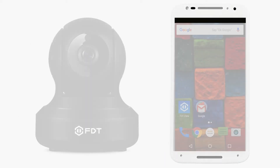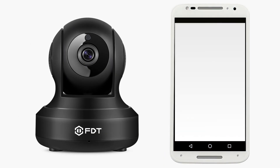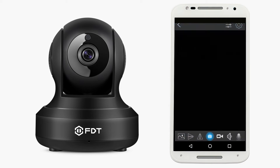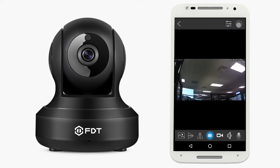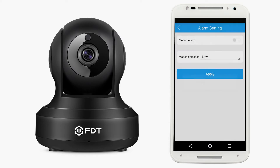To get started, launch the FDT View app on your device. From the home screen, tap the gear-shaped camera settings icon. Tap the gear-shaped settings icon again to access the camera settings menu. Tap alarm setting to enter the motion detection menu.